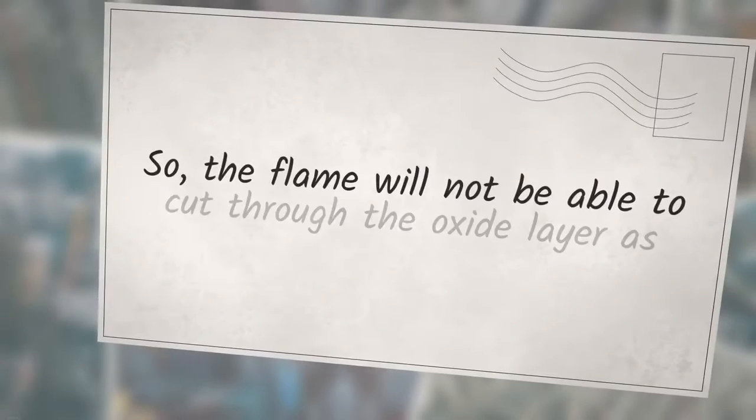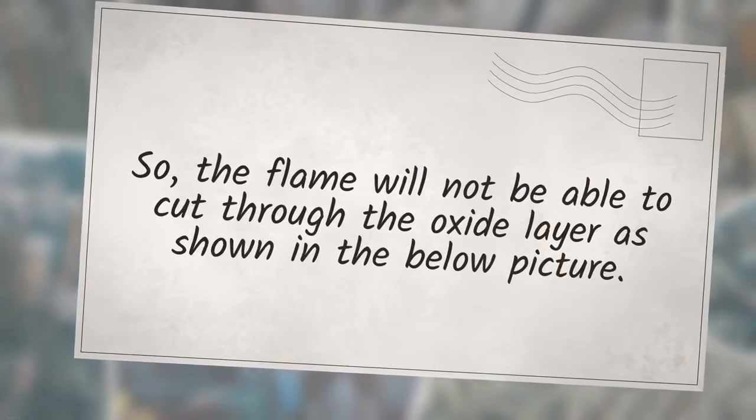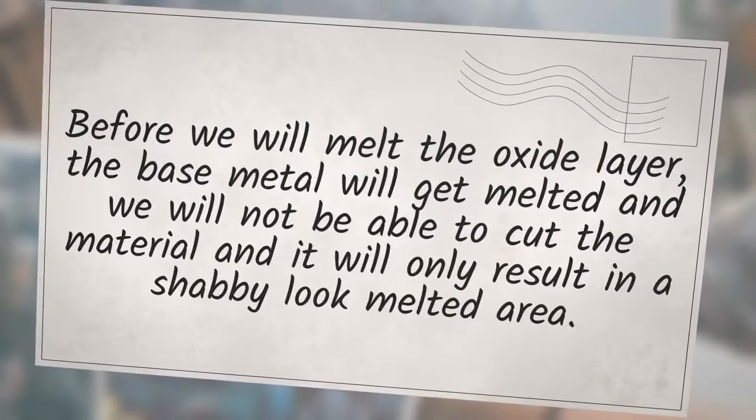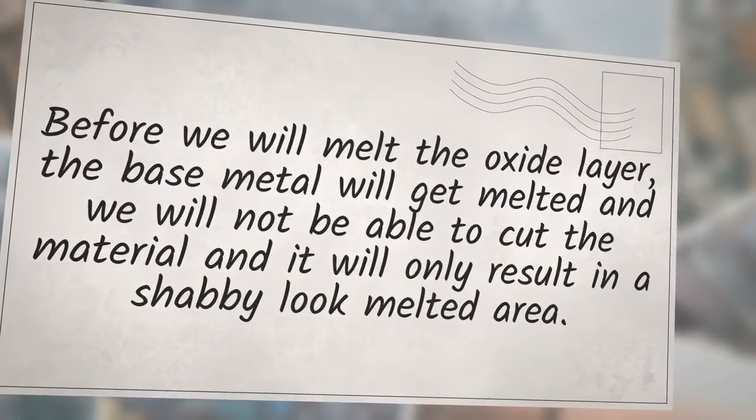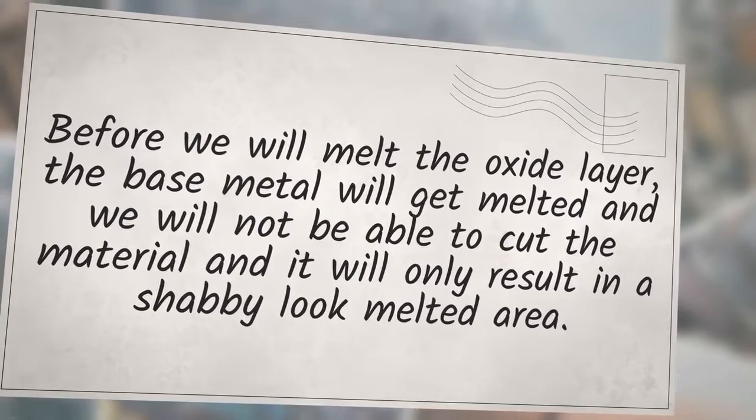So, the flame will not be able to cut through the oxide layer as shown in the picture. Before we will melt the oxide layer, the base metal will get melted and we will not be able to cut the material and it will only result in a shabby look melted area.